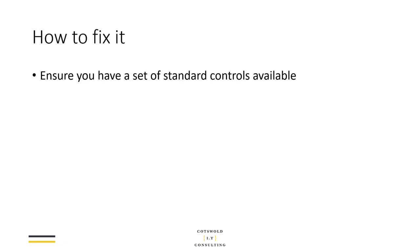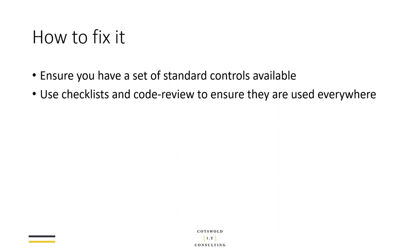Now let's look at how to fix it. The first step is making sure you have a set of standard controls available to your development team. In most good frameworks there should be standard authorization type controls — role-based, person-based, ID-based, depending on what your site is doing. You need to make sure you're using checklists and code reviews to ensure they're being used. It's all very well having the controls, but if people forget to add them — which people do — you need static analysis, linting tools, or Resharper in .NET to say every action on every controller must have an authorized-type attribute.